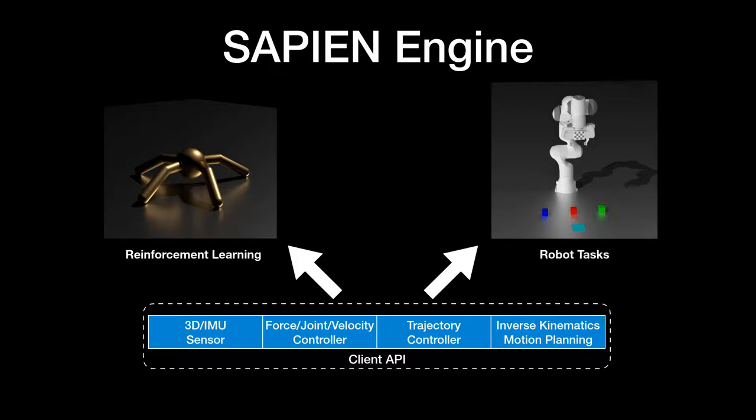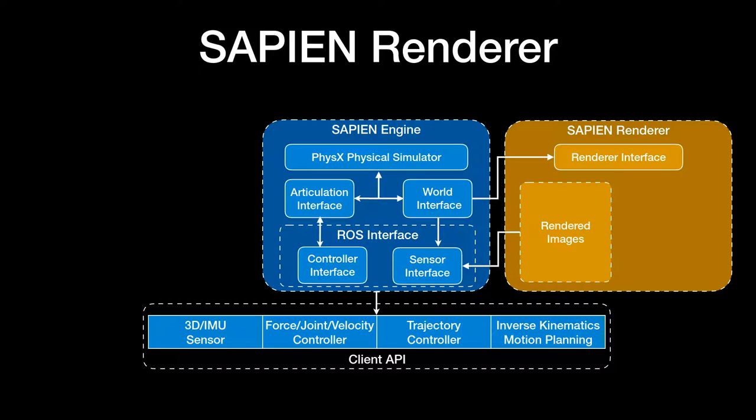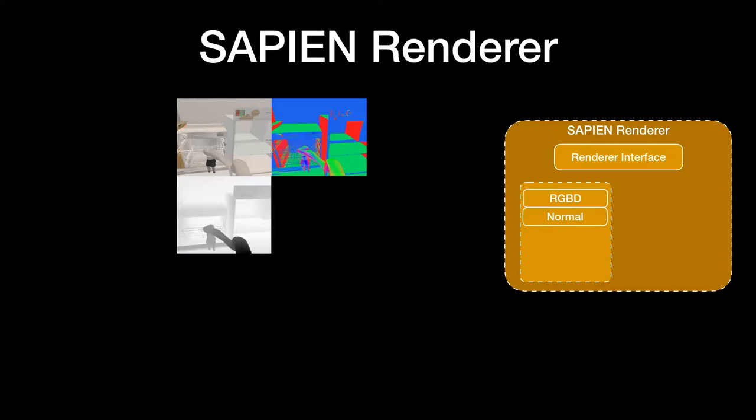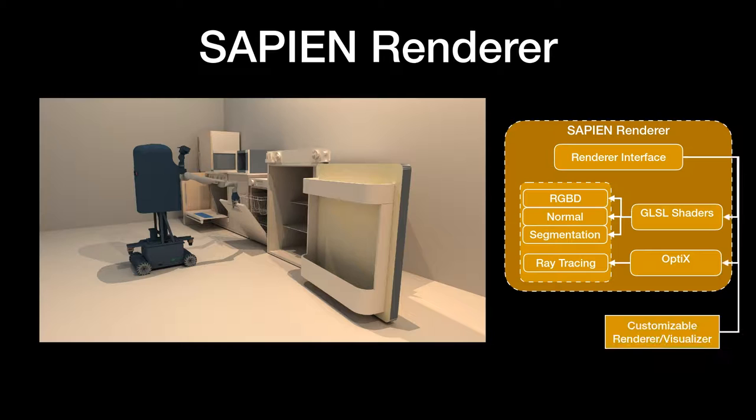Next, we move on to see how Sapien renders the world. Sapien Renderer takes the world information from Sapien Engine and generates images and sensor inputs. It supports RGB images, depth map, normal map, and part segmentation through GLSL shaders, and it provides ray-traced rendering with the OptiX framework. These shaders are also customizable to support special rendering needs.